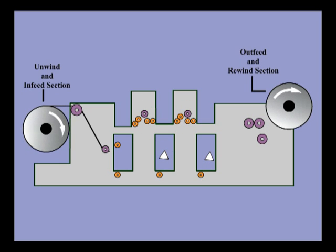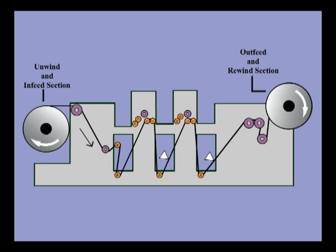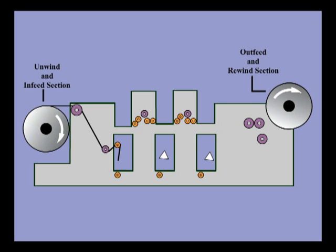The fourth section of the press is the outfit or rewind section. It is here that the webs are rewound after printing. This is referred to as roll to roll printing. Here again, the web tension must be controlled to keep the roll wrinkle-free and uniform as it rewinds.